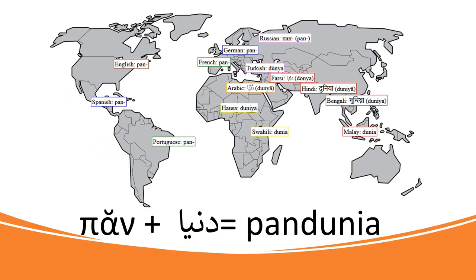The name of the language Pandunia is combined from two international words, Pan and Dunia. The first part, Pan, is a Euro-American prefix which means something that includes everything. It is known in words like Pan-American, Pan-European and Pan-Asian. The second part, Dunia, comes from the Afro-Asian word, probably originally Arabic word Dunia, which means world. It is known in very many languages all the way from the Atlantic Ocean to the Pacific Ocean. So together, Pan and Dunia means something that covers or represents all of the world.